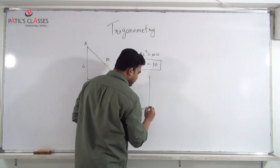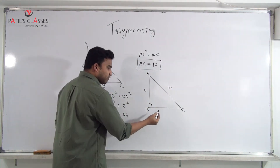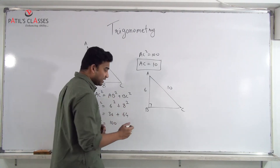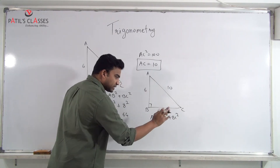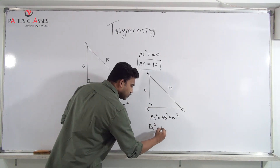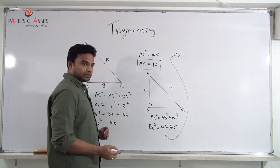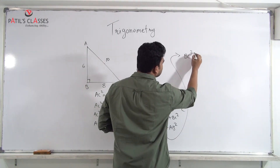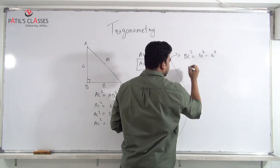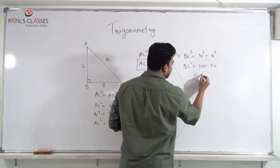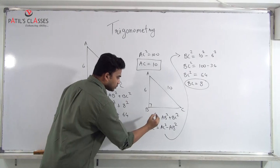Sometimes in the same triangle ABC right angled at B, they give you AC = 10 and AB = 6 and ask you to find BC. Since AC² = AB² + BC², rearranging gives BC² = AC² − AB² = 100 − 36 = 64, so BC = 8.